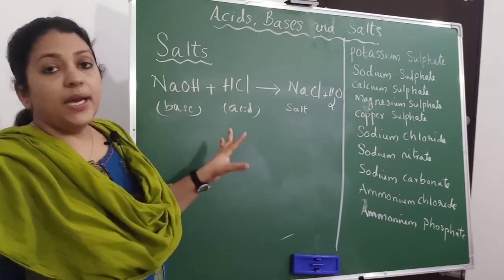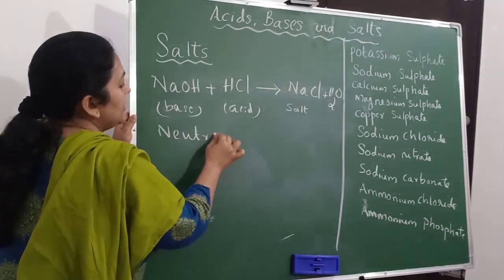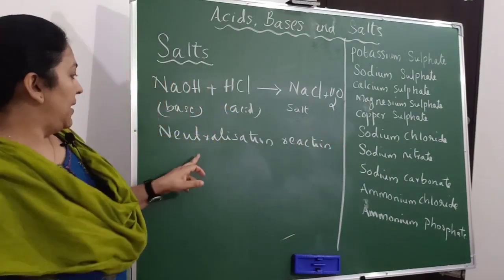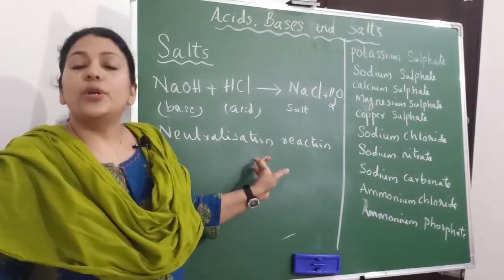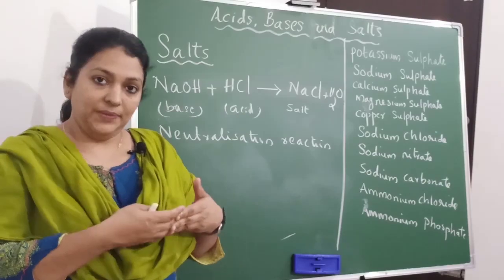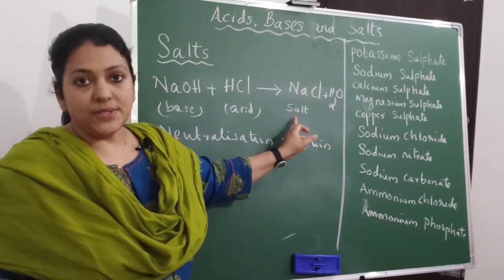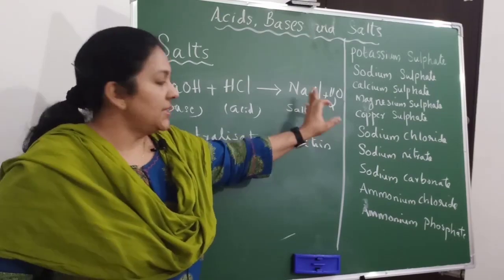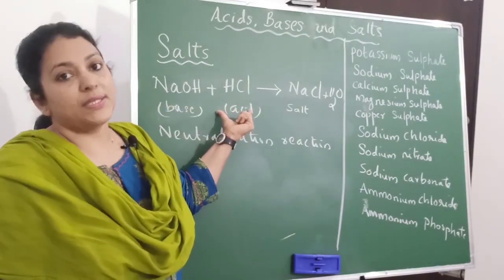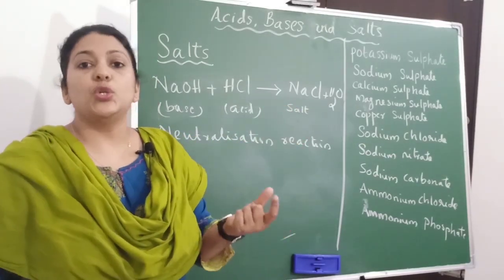This reaction has a particular name — it is called a neutralization reaction. Why is this reaction called a neutralization reaction? Because when an acid and a base react with each other, they neutralize each other, and as a result, two neutral compounds — sodium chloride and water — are produced. In this reaction, we have taken a strong base and a strong acid, therefore the salt formed will have a pH of 7, which is neutral in nature.